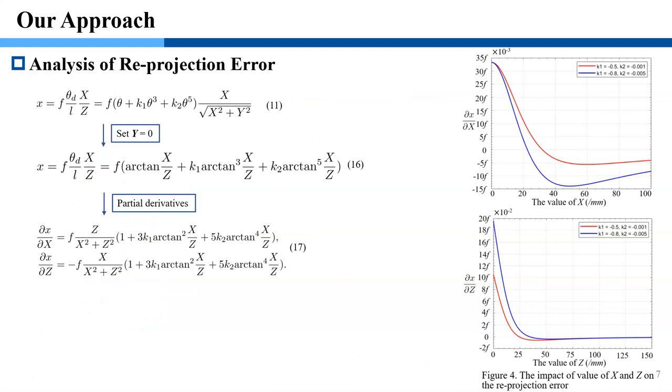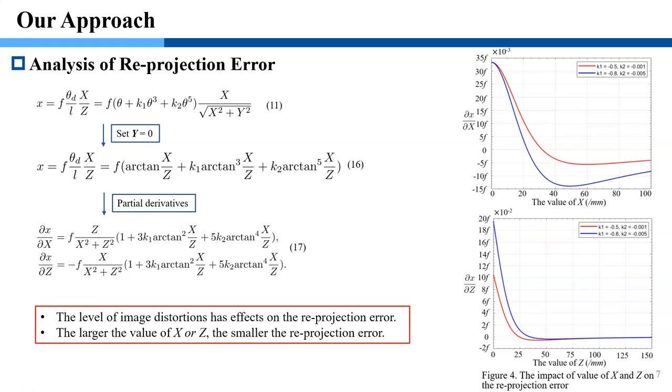We analyze the factors that affect the reprojection error by the partial derivative in equation 17. We plot the curve based on the equation for better visualization shown in Figure 4. We find that the level of 3D joint locations has effects on the reprojection error.